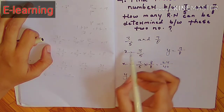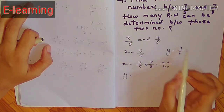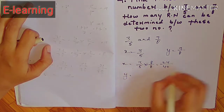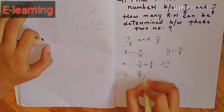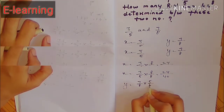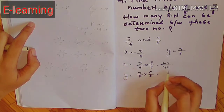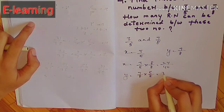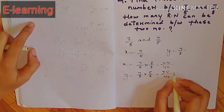y में हम करेंगे x के denominator से y में ऊपर नीचे into करेंगे: 7/8 into 5/5। अब हम 7 को 5 से into करेंगे: 7×5=35, 8×5=40। तो y = 35/40 हो गया।